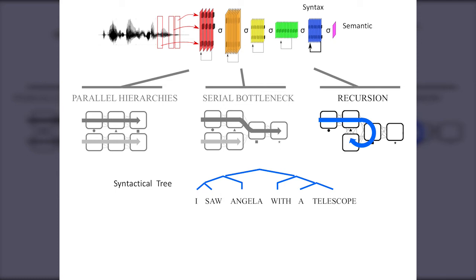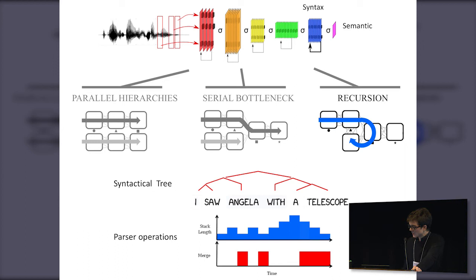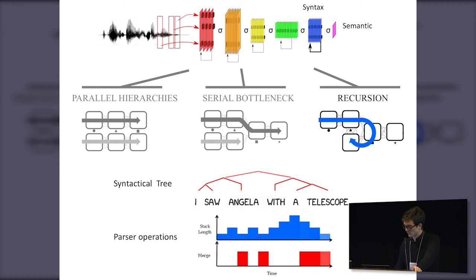Parsers from computational linguistics give us predictions on how the brain could construct such a tree. This animation shows a bottom-up parser with two main operations: the stack (in blue) and the merge operation (in red) that Angela mentioned. The idea is that you listen to words in sequence, and as long as you cannot bind them together, you put them in the stack. So we have a model that tells us what operations the brain should perform, which we can use as regressors to predict MEG activity.